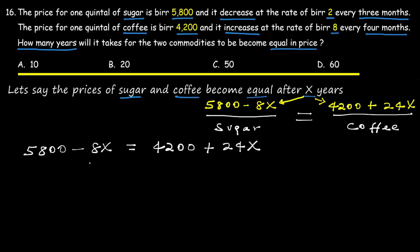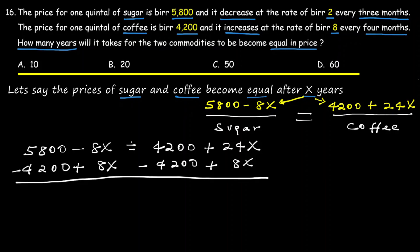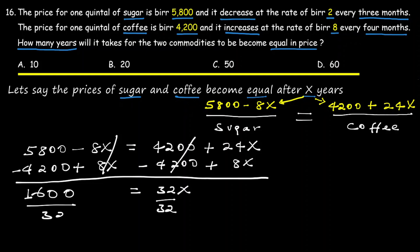Now let's solve for x. Rearranging the equation: 5800 minus 4200 equals 24x plus 8x, which gives 1600 equals 32x. Dividing both sides by 32, x equals 5.